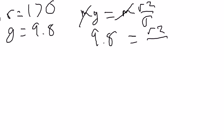v squared over radius equals 170. If you multiply those two together and divide,